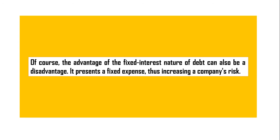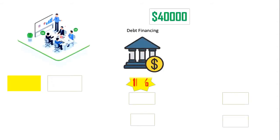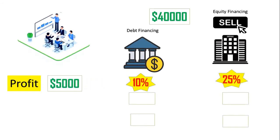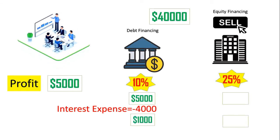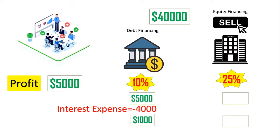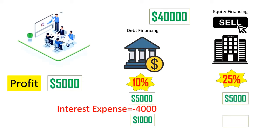Of course, the fixed interest nature of debt can also be a disadvantage — it presents a fixed expense, increasing a company's risk. Going back to our example, suppose your company only earned $5,000 during the next year instead of $20,000. With debt financing, you still have the same $4,000 of interest to pay, leaving you with just $1,000 in your hand.